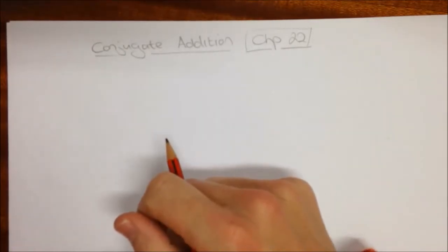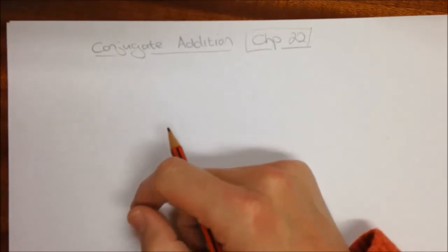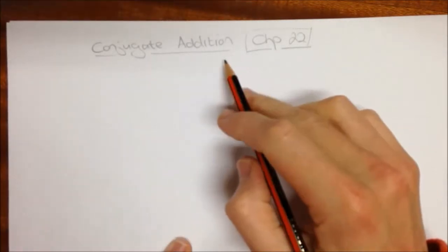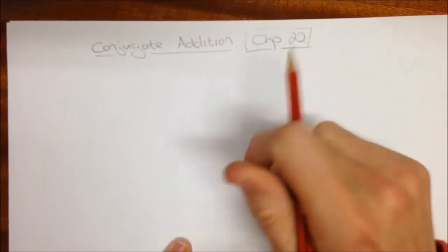In order to move forward, we're actually going to have to take a little bit of a detour from our enolate chemistry and consider the concept of conjugate addition, which is found in chapter 22 in your textbook, the Clayton textbook.